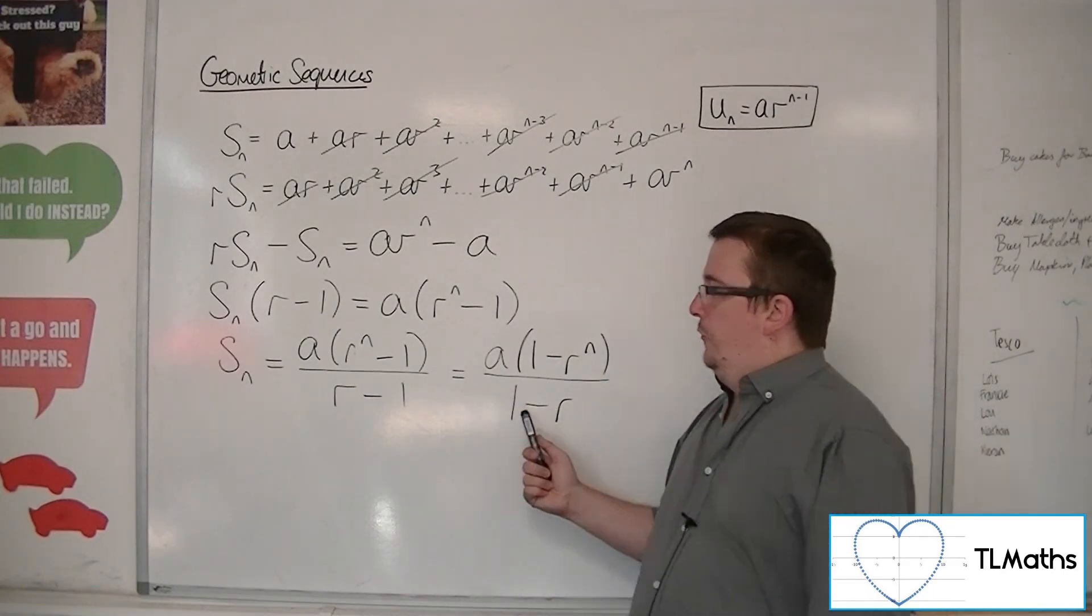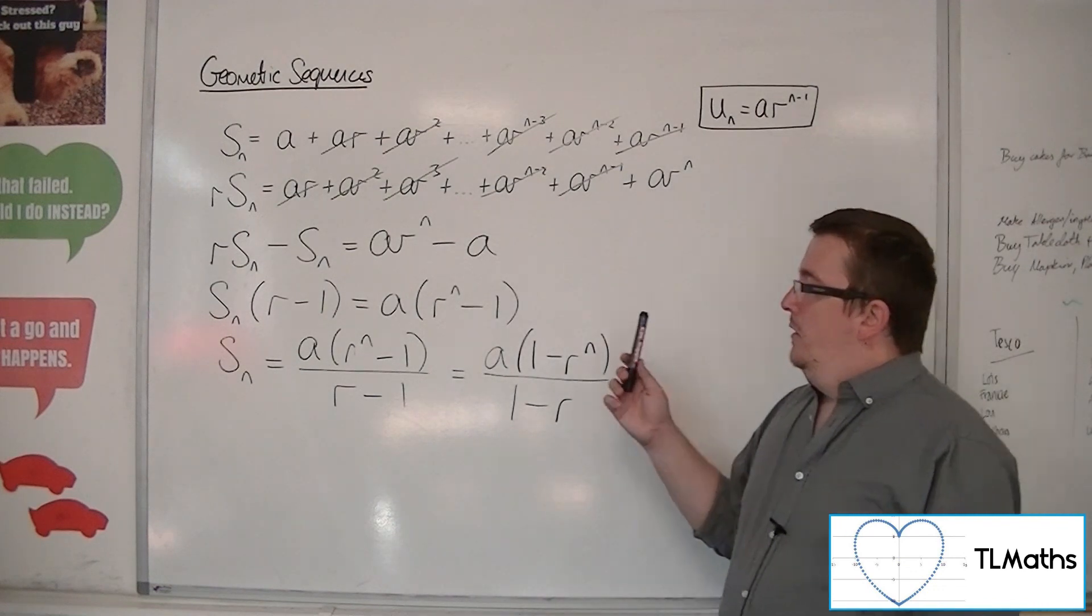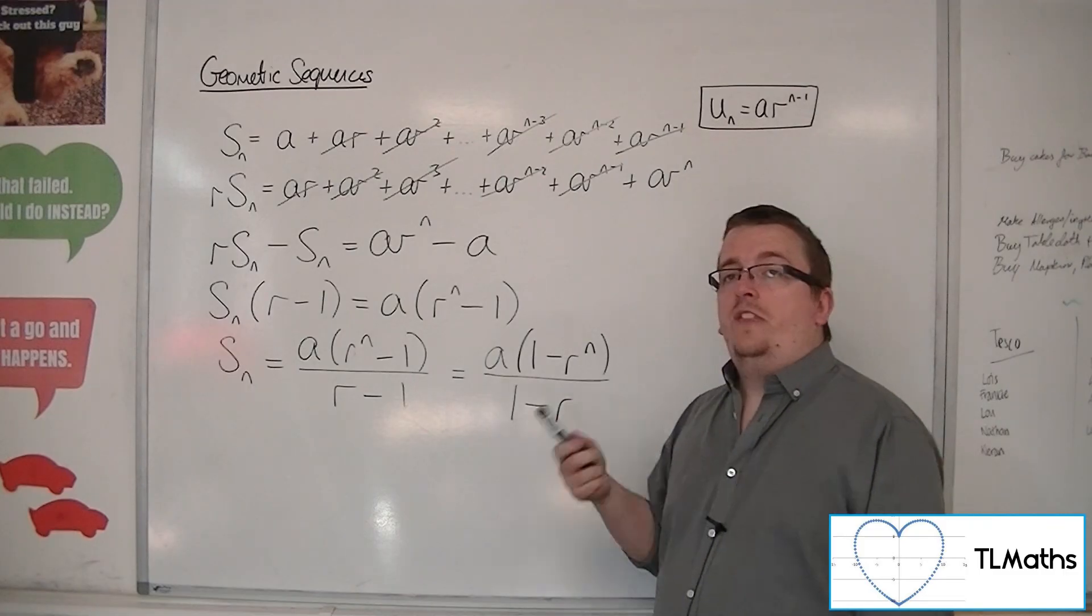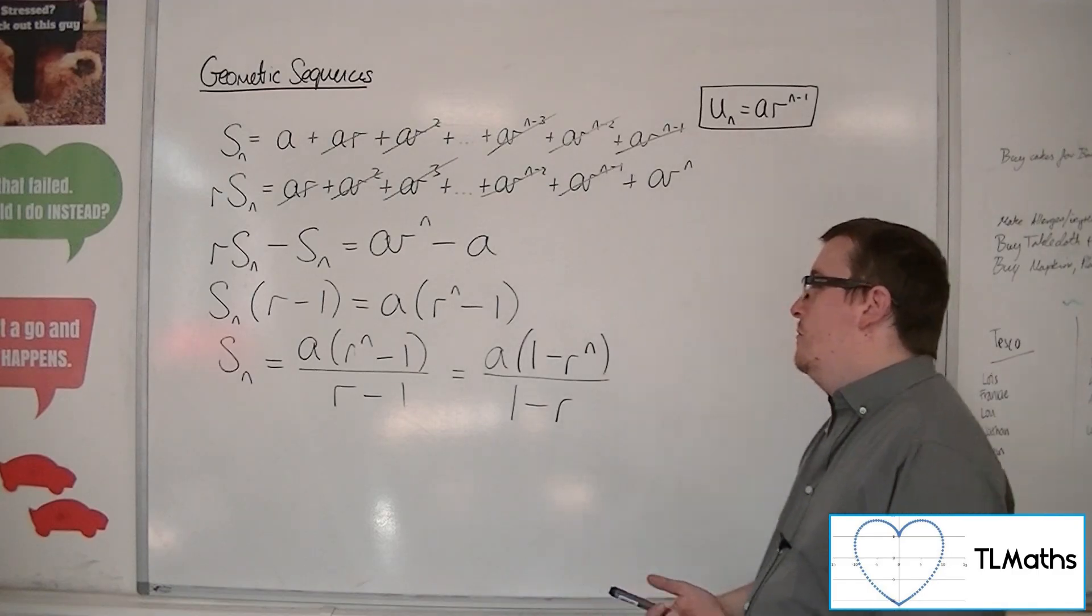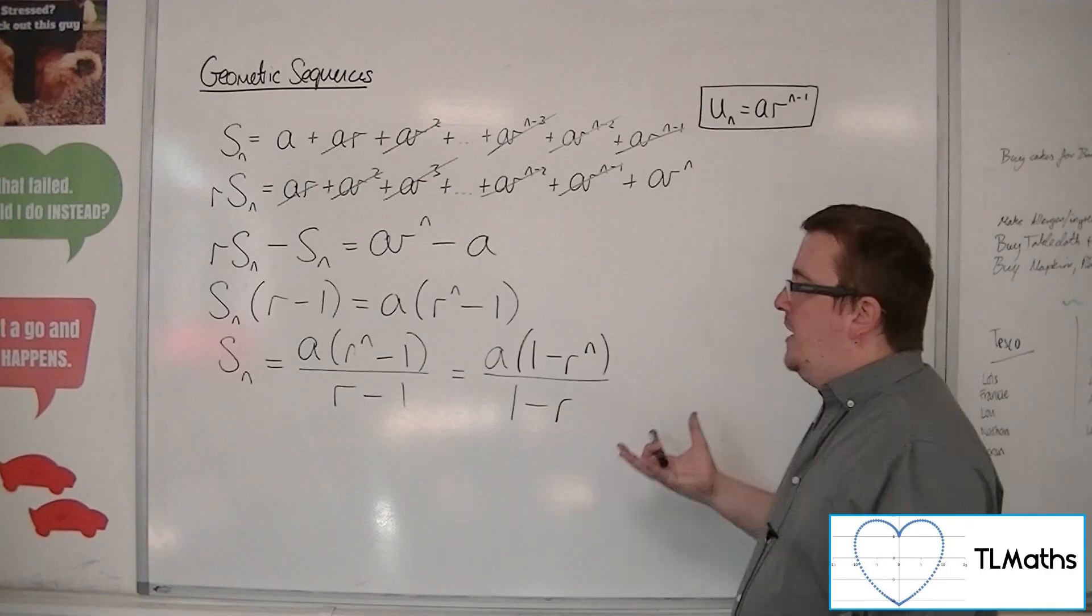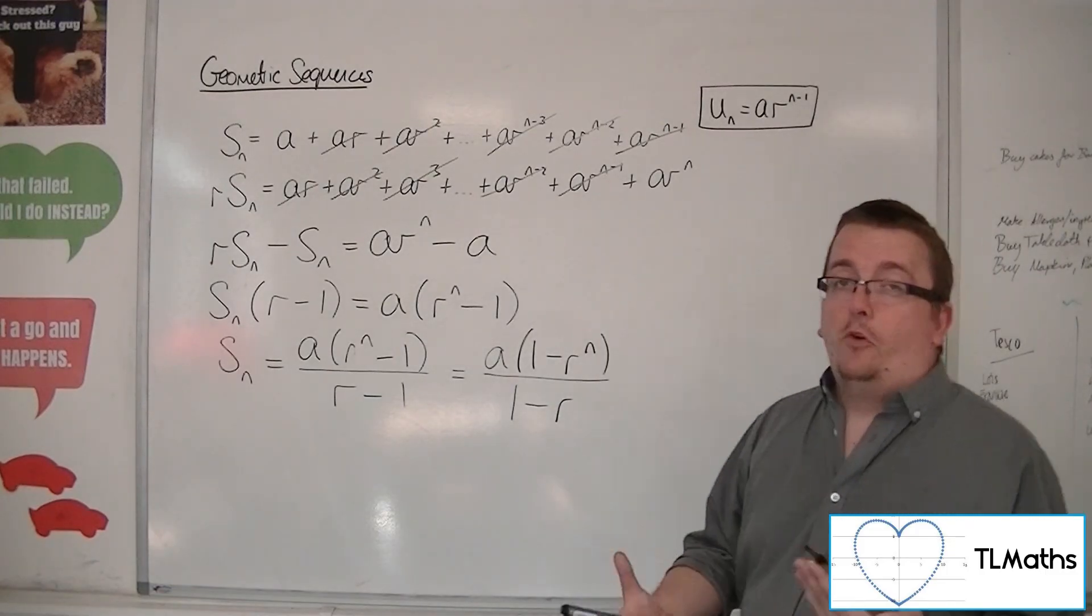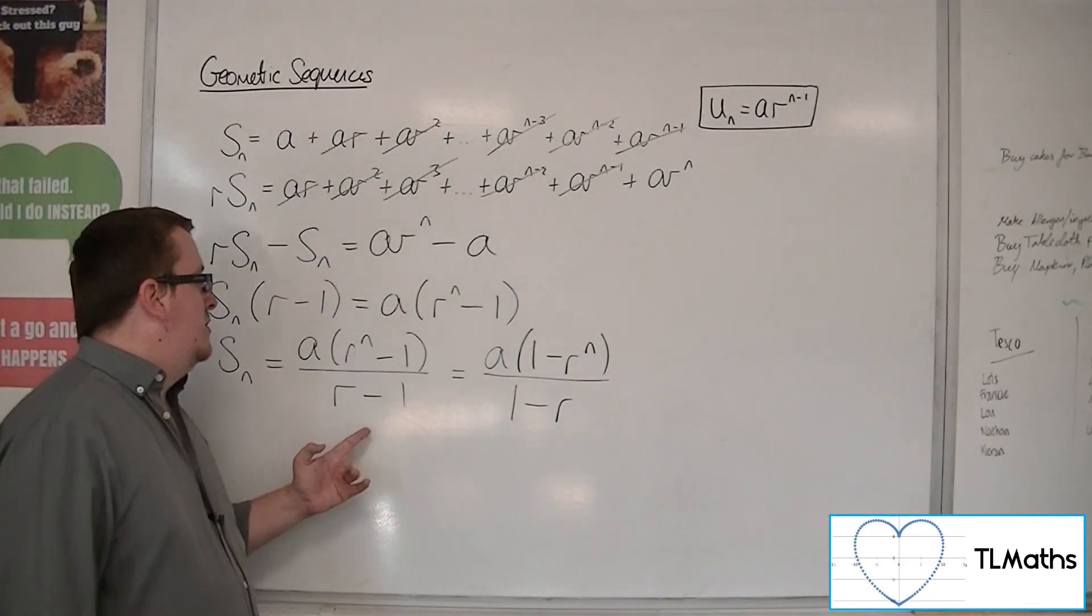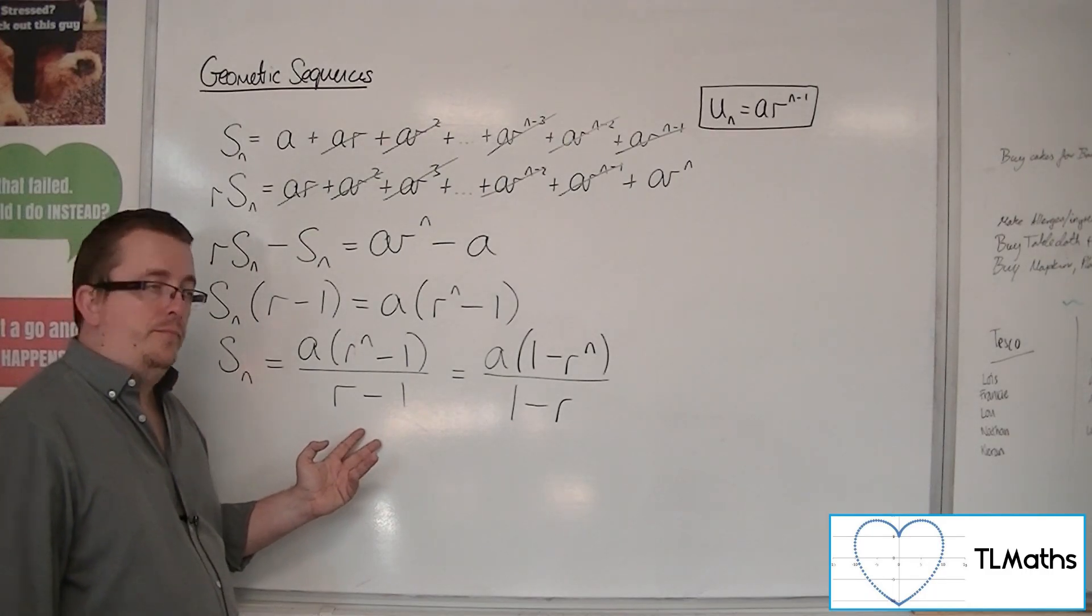Both of these forms are synonymous. This one is often easier to work with if the r is between minus 1 and 1, or usually you end up using it if r is less than 1, really to avoid a negative sign in the denominator. So if r is larger than 1, we would end up using this one here.